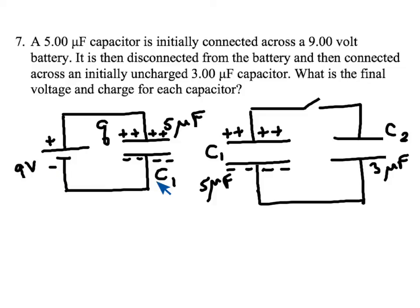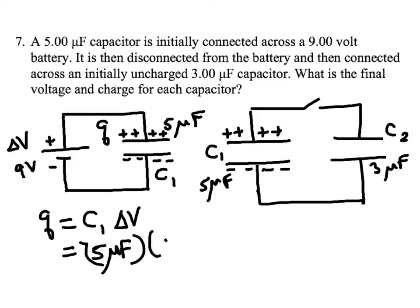So the capacitor C1 gets a certain amount of charge Q from this 9 volt battery. I can figure out what that Q is. Q is C1 times delta V, and the delta V is this 9 volts. So Q is 5 microfarads times the 9 volts. So there is 45 microcoulombs of charge on C1.